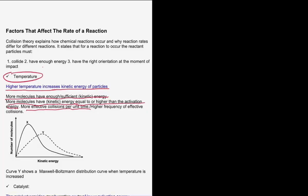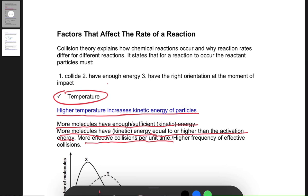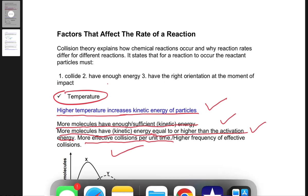From this document we can see that at high temperature, the kinetic energy of particles increases. More molecules then have sufficient kinetic energy — equal to or higher than the activation energy — resulting in more effective collisions per unit time. This is grounded in collision theory, not arbitrary reasoning.